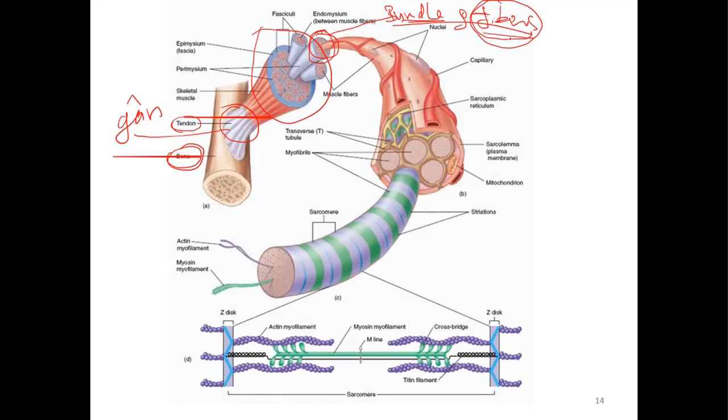In a myofibril you have many myofilaments. Myofilament - I don't know how to translate in Vietnamese - but myofilament is a smaller organ in a muscle. And there are two types of myofilament: actin and myosin.